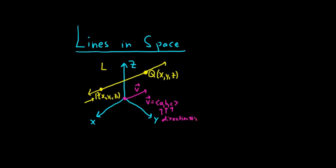Alright, so recap. To find a line in space, we need two things. We need a point on the line. That's our P, x sub 1, y sub 1, z sub 1. And a parallel vector, which we have V. The components of V are called the direction numbers. And V is called a direction vector.